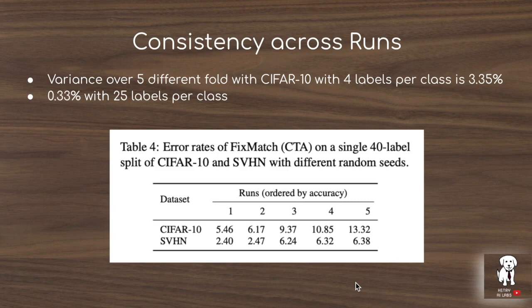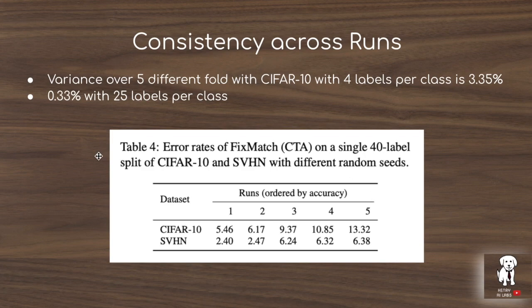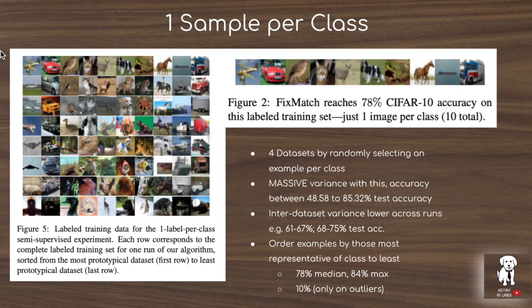One of the best characteristics of this paper is an extensive discussion of ablation studies showing different factors of variation that result in different performance for FixMatch. The first is consistency across runs. In the semi-supervised learning simulation, you're sampling say 40 labeled data points from the 50,000 labeled CIFAR-10 training set. How you sample these data points is enormously important for the accuracy you end up with — for example, sampling the four most representative airplanes versus four outlier airplanes would yield very different results. They construct an experiment using an algorithm for detecting outliers that sorts samples within a class based on how representative they are.